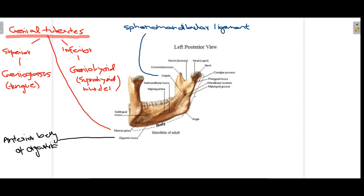The lingula is a slight elevation where the sphenomandibular ligament is attached. Through this posterior view we can appreciate additional structures including the digastric fossa, the genial tubercles, and the sphenomandibular ligament.